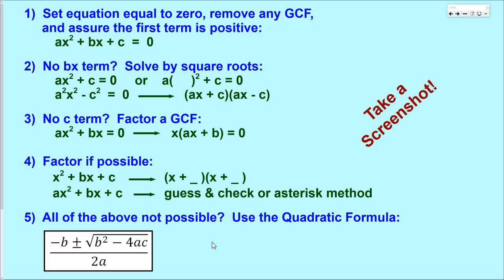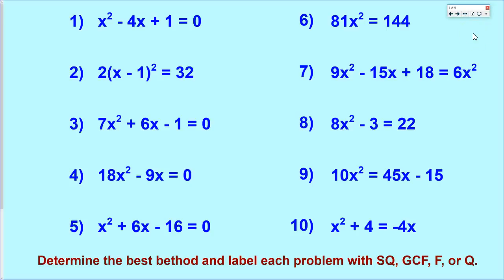Now we want to put the flowchart into action. On the next screen I'm going to show you a number of quadratic equations, and I want you to pause the video and label each problem with the type of method you would use: Sq for square root, GCF for removing a GCF, F for factoring, and Q for quadratic. Use the flowchart and label each one. If you can't get one or two, that's fine — just complete them as best you can. Pause the video here and do that.